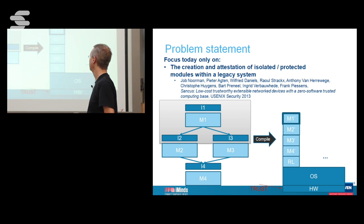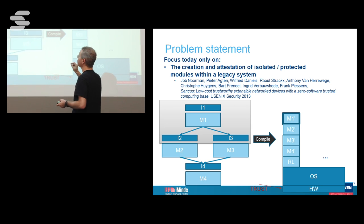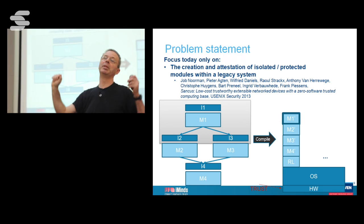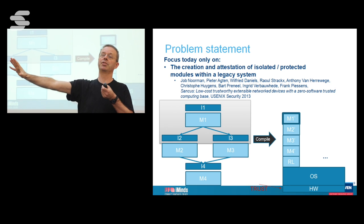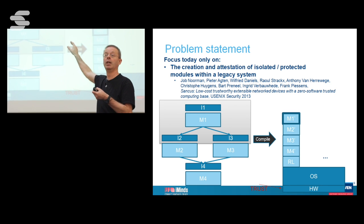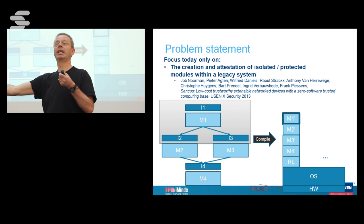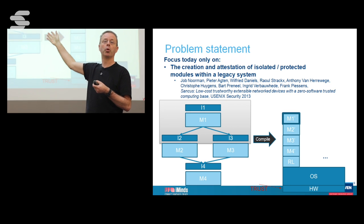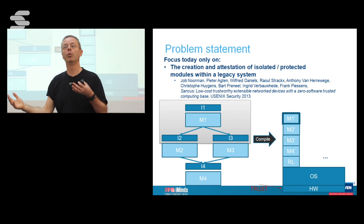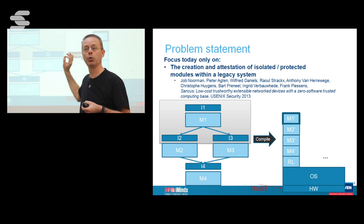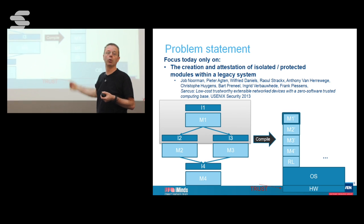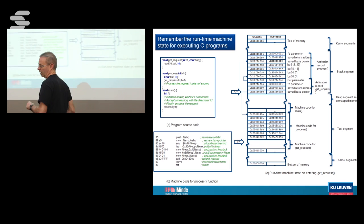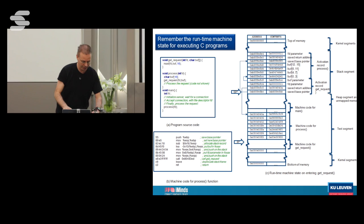How can you create an isolation boundary for one module of a program within an existing system, and be sure — even when the rest of the system is infected with malware — that you can interact with the program and trust the responses you get? That's only one piece of the puzzle. Other pieces involve dealing with compiler bugs or vulnerabilities in the module itself — I won't talk about those today.